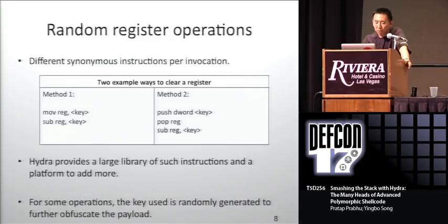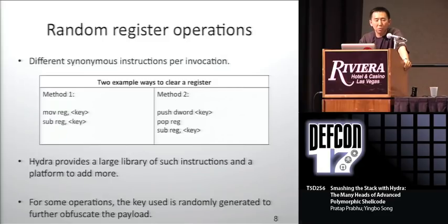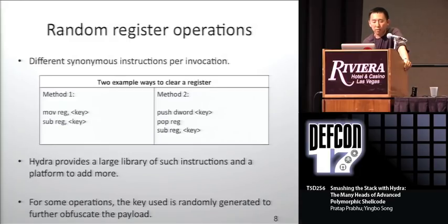Register clearing operations: we have many different ways of selecting and clearing registers. Most methods involve generating random keys, moving the keys around, then moving, subtracting registers, and so on — as long as it clears the register at the end, it does various things before that. Hydra provides a large library of such instructions and a platform to easily add more. For some operations, a random key is generated to further obfuscate the payload.